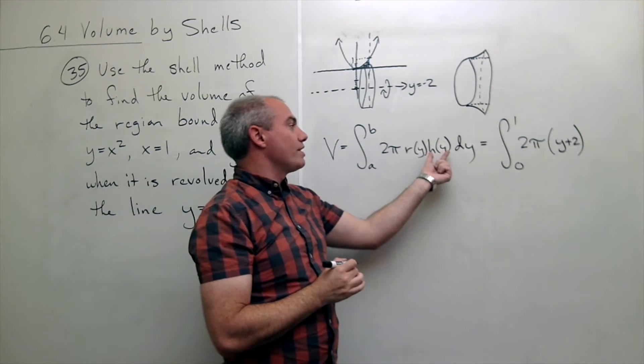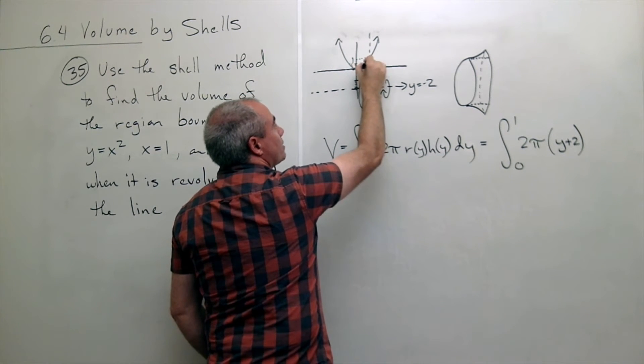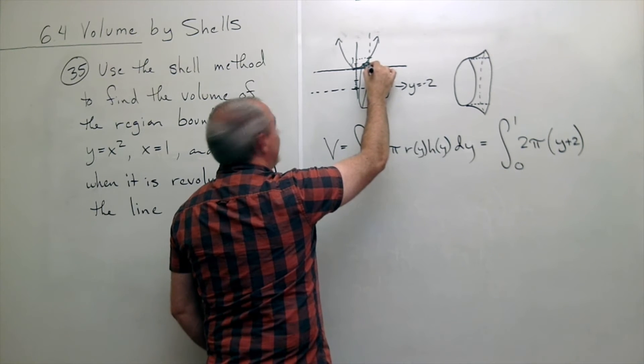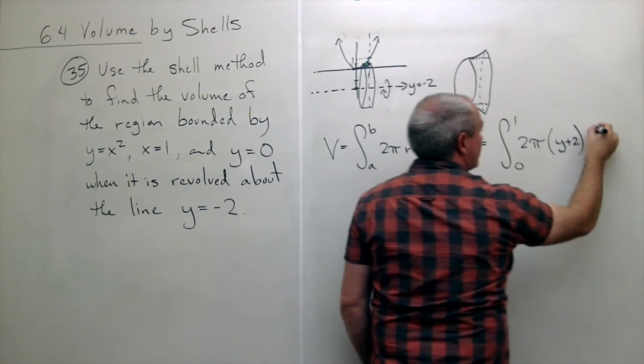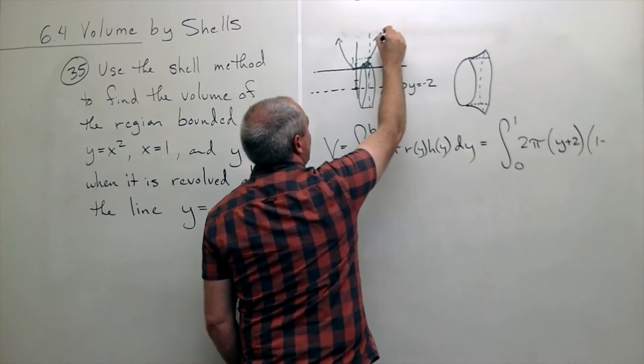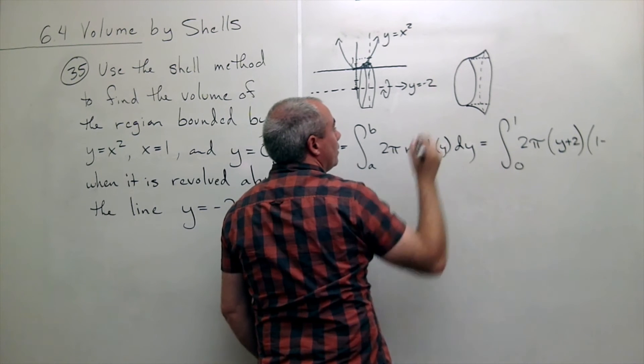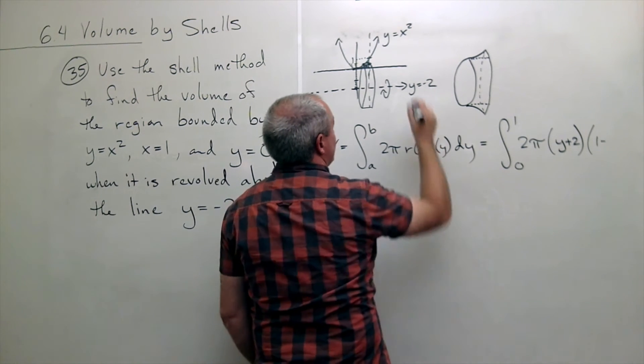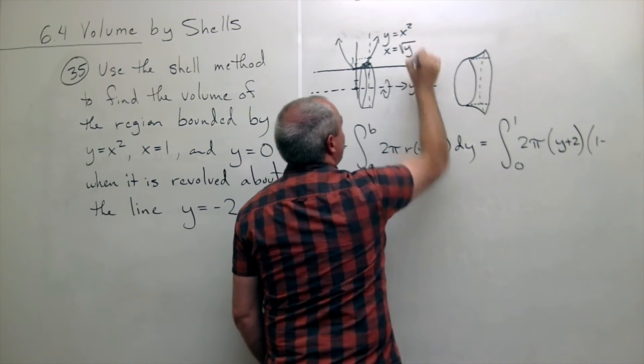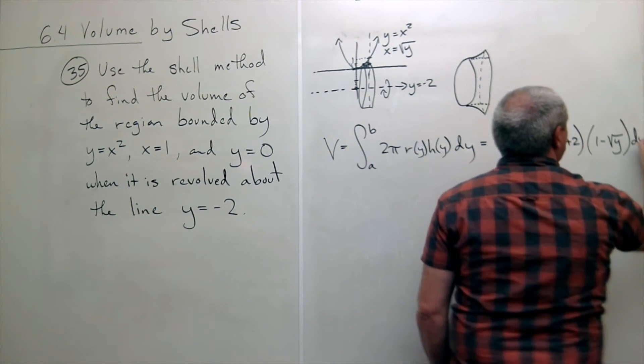And now what's the height? Well the height is still the top function minus the bottom function. The top function is x equals one, or just one, minus the bottom function. And the bottom function, this was y equals x squared. But I need to solve that for x, because I need it in y, so this would be x is equal to the square root of y. So I'm going to subtract the square root of y, dy.